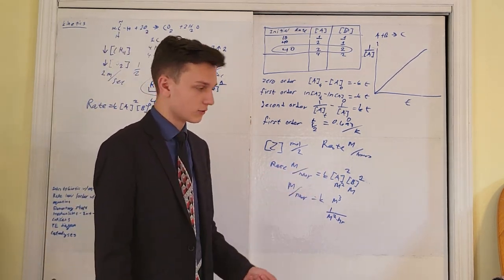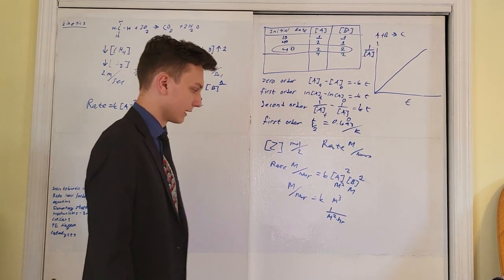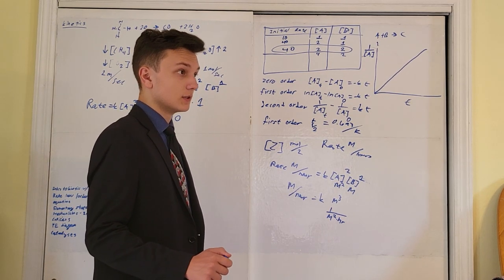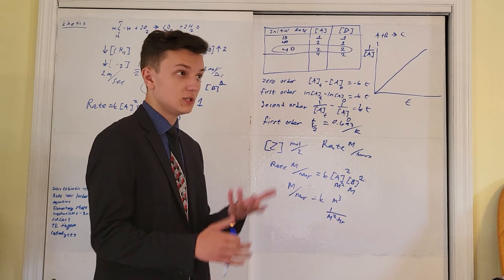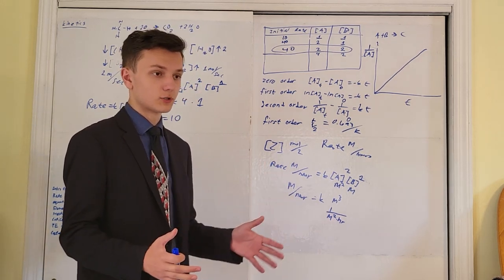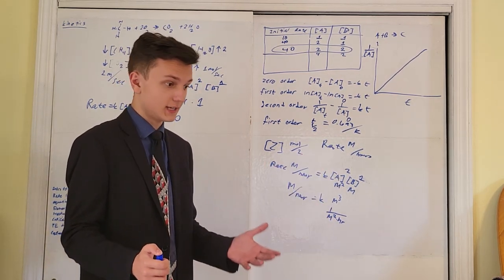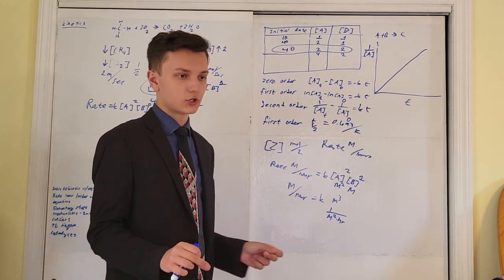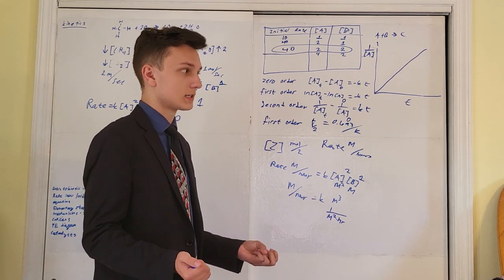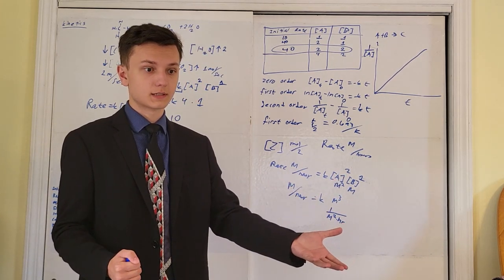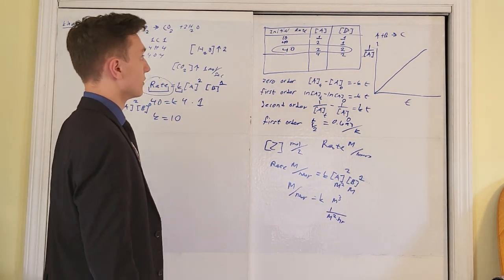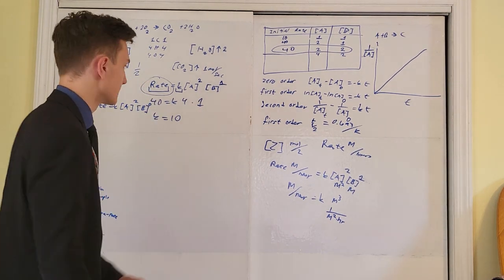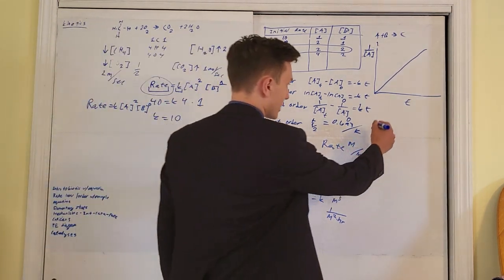The units of K will be different for zero, first, second, and higher order reactions. On multiple choice, they sometimes only ask for the units of K. On the FRQ, there's usually a subsection to solve for K and give correct units. I always recommend writing out the equation with all units so you can see what units K needs to equalize both sides of the equal sign.